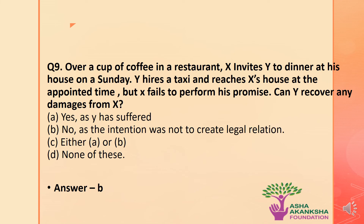The next question: over a cup of coffee in a restaurant, X invites Y to dinner at his house on Sunday. Y hires a taxi and reaches X's house at the appointed time, but X fails to perform his promise. Can Y recover any damages from X? Options are: A) Yes, as Y has suffered. B) No, as the intention was not to create a legal relation. C) Either A or B. D) None of these. The answer is option B — no, as the intention was not to create a legal relation, Y cannot recover any damages from X.